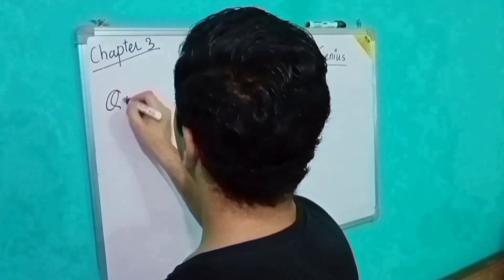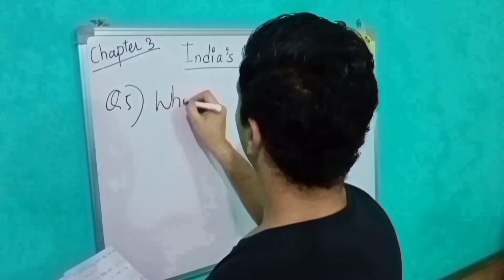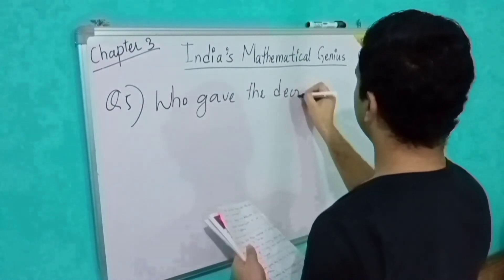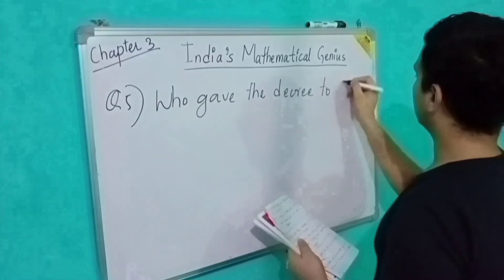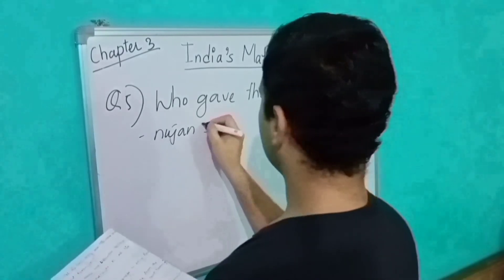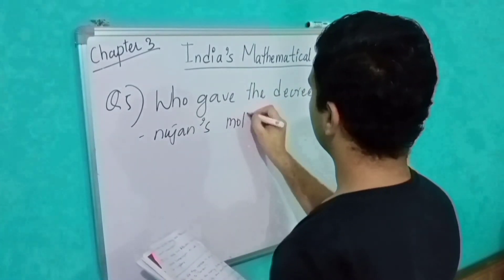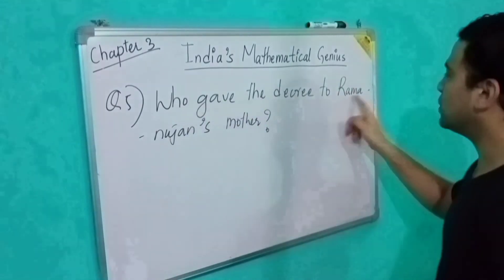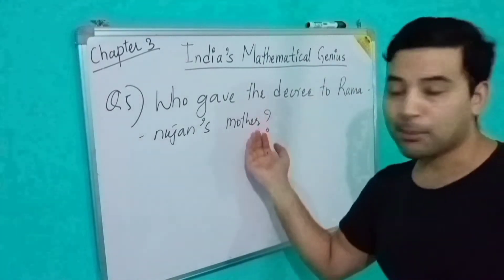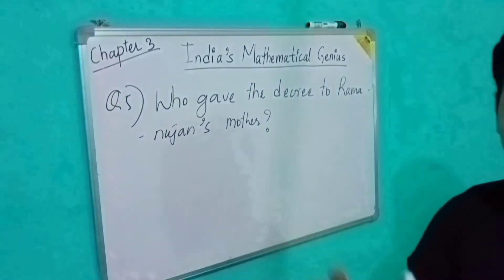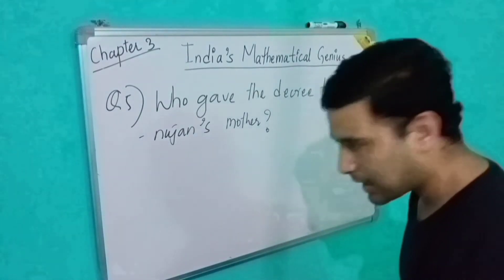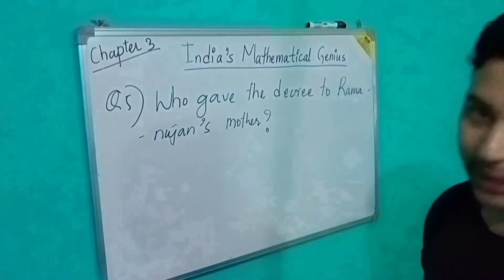Question number 5: Who gave the decree to Ramanujan's mother? Decree means 'Agya.' Ramanujan's mother — how was she? She was a strong believer and she belonged to the Brahmin caste. Bhagawan Namakalala gave the decree to Ramanujan's mother.